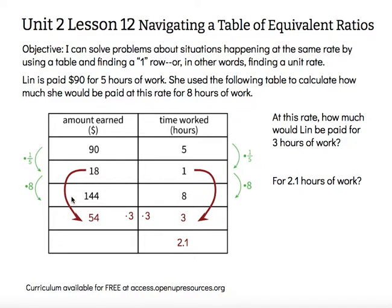How much would she make for two and one-tenth of an hour? One-tenth of an hour is one-tenth of 60, or six minutes — so if she worked two hours and six minutes exactly, again she would take that hourly rate and multiply it by two and one-tenth. So she would take 18 and multiply it by two and one-tenth, and she would get $37.80.